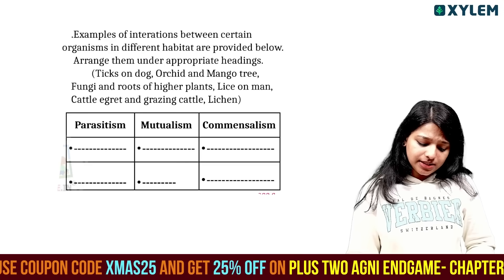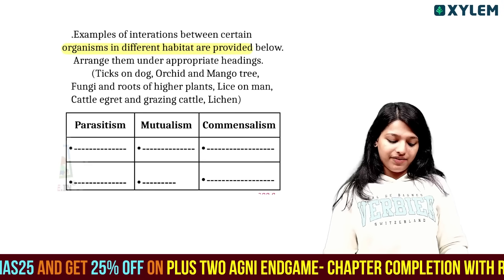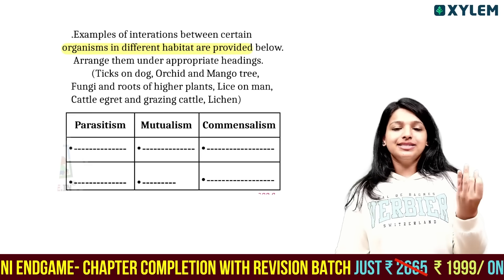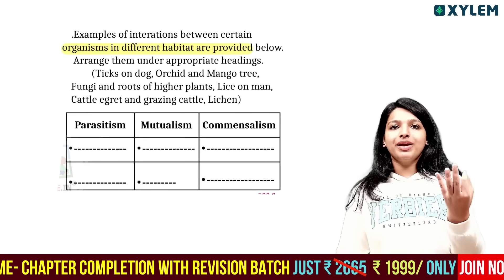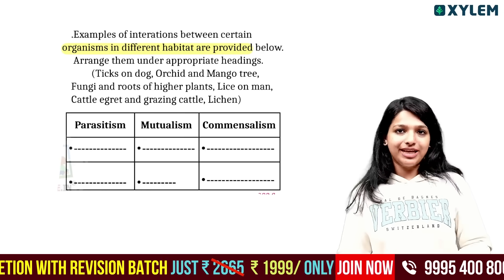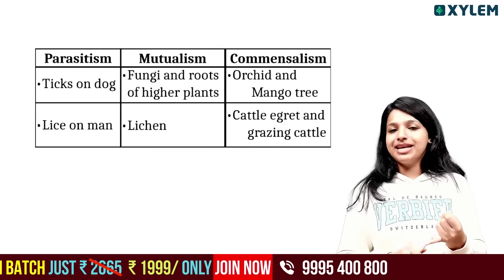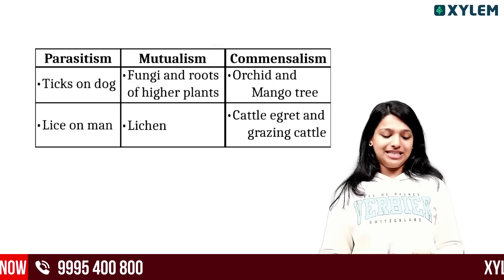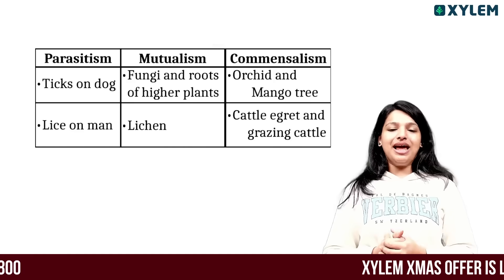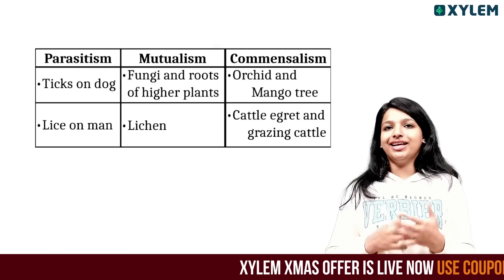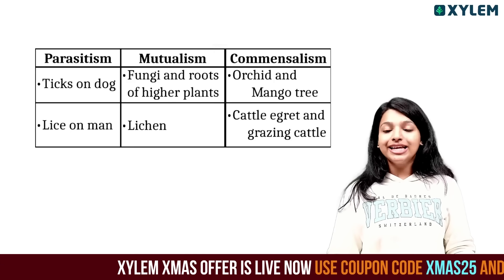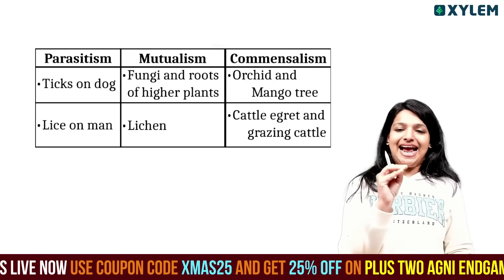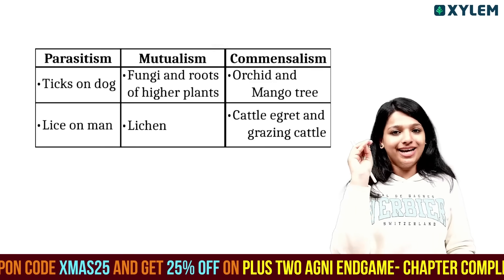Examples of interaction between certain organisms in different habitats: ticks on dog, orchid and mango tree, fungi. Parasitism, mutualism, and commensalism. Parasitism: ticks and dog - ticks are parasites. Fungi and roots in higher plants show a mutualistic relation. Orchid and mango tree - commensalism. Cattle egret and grazing cattle is another example of commensalism.